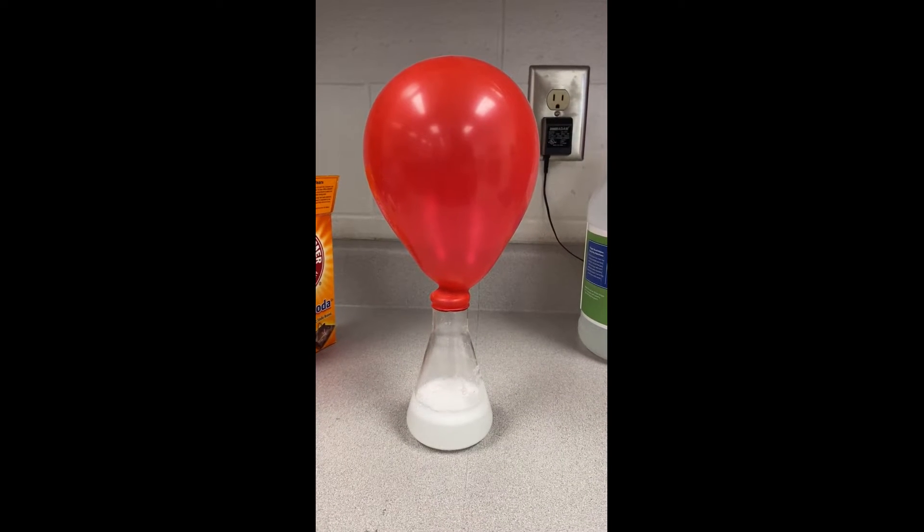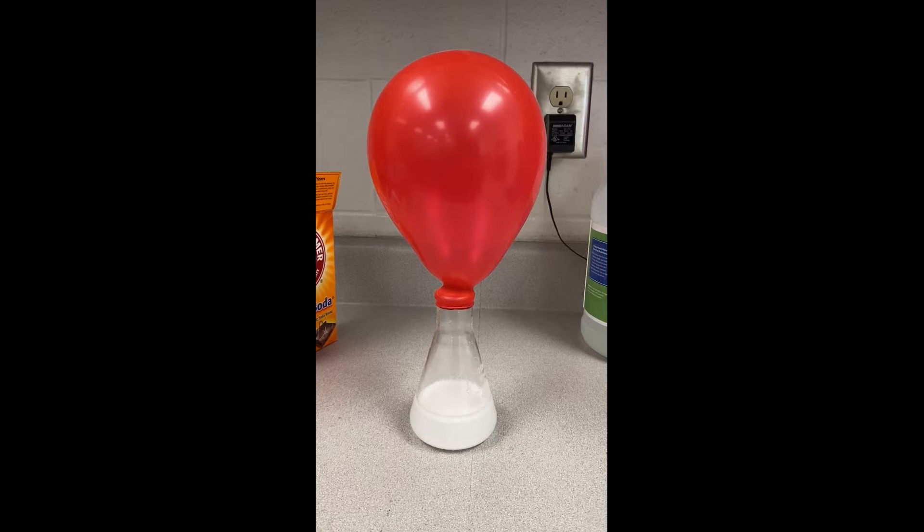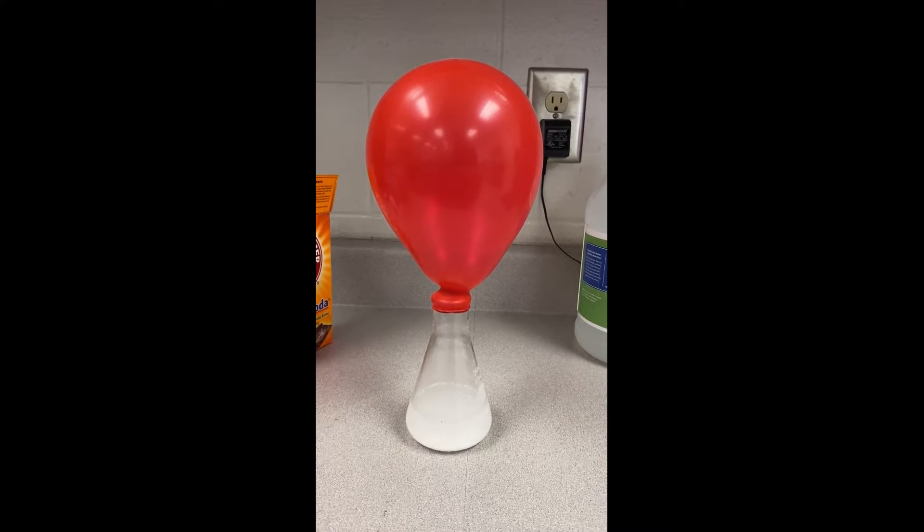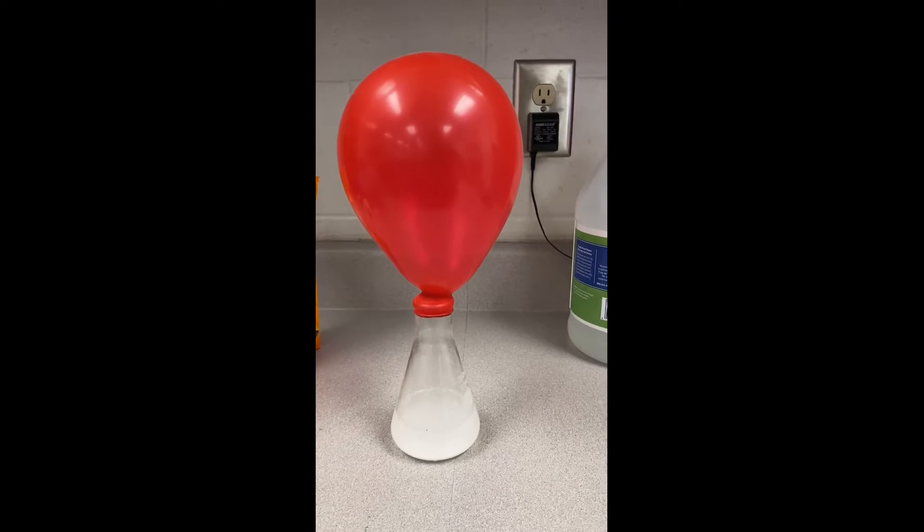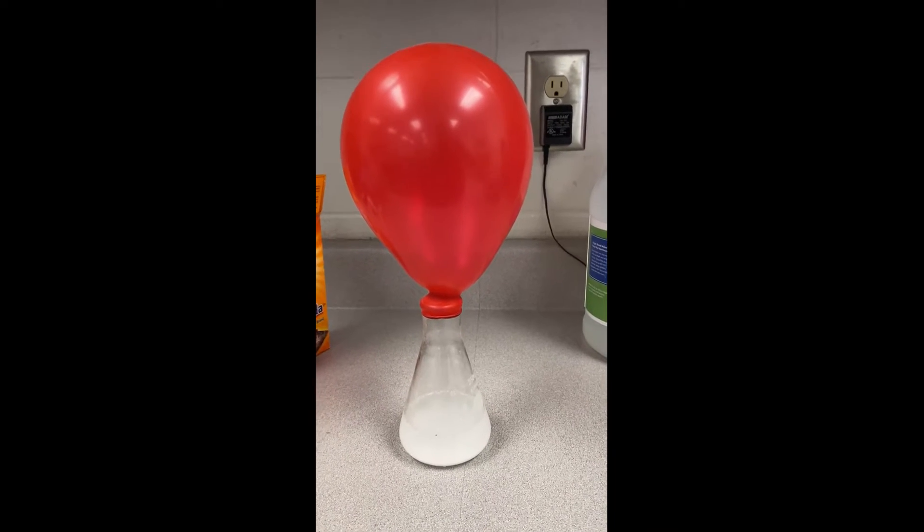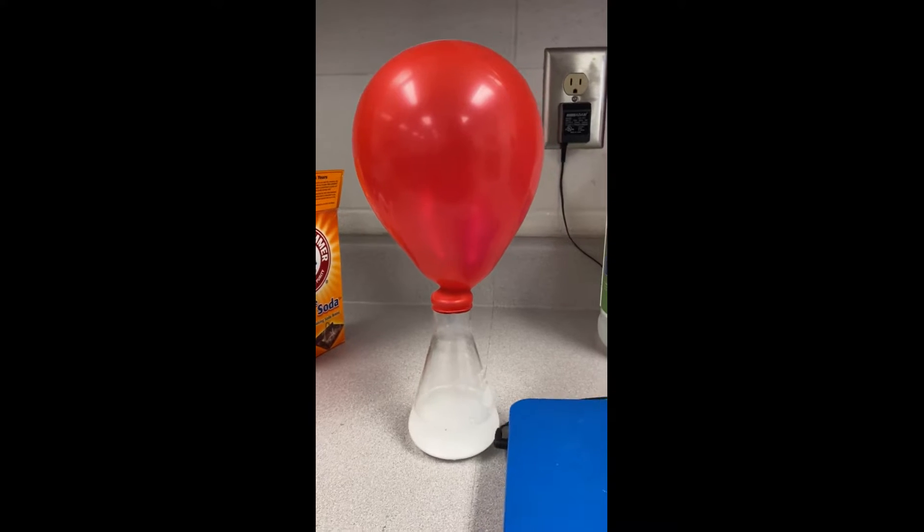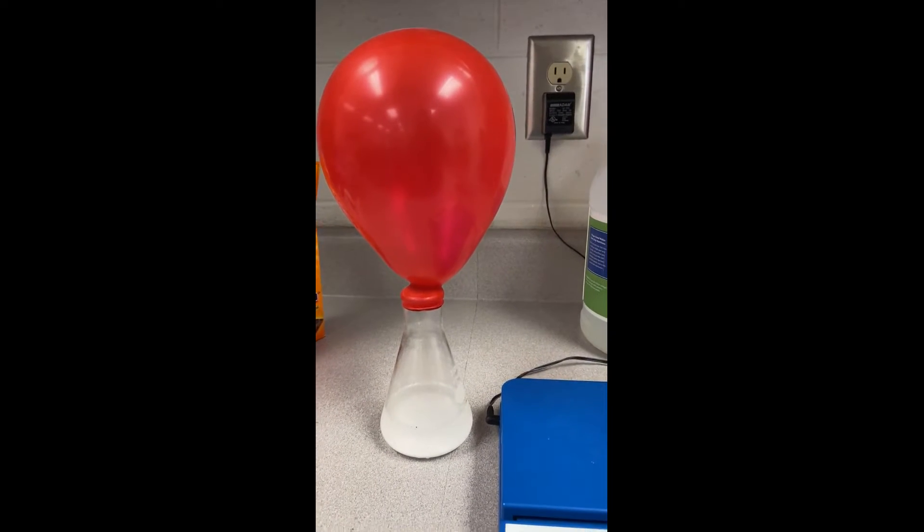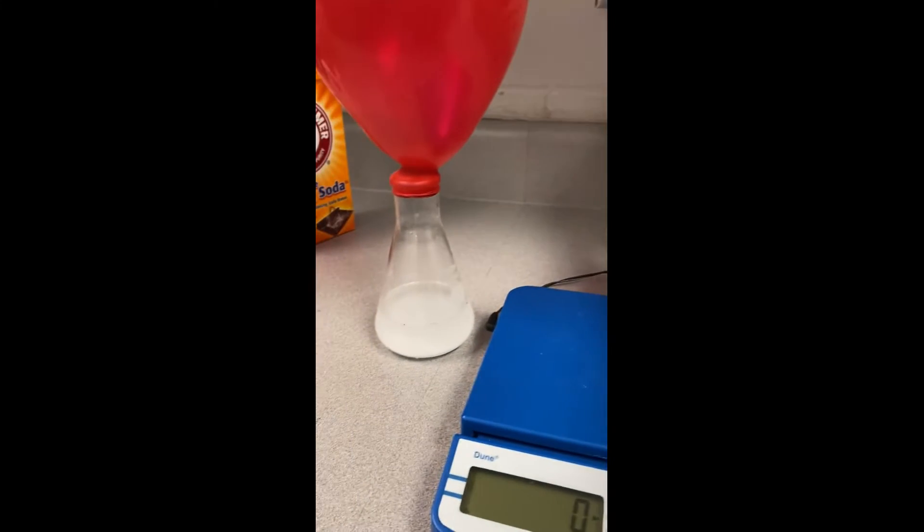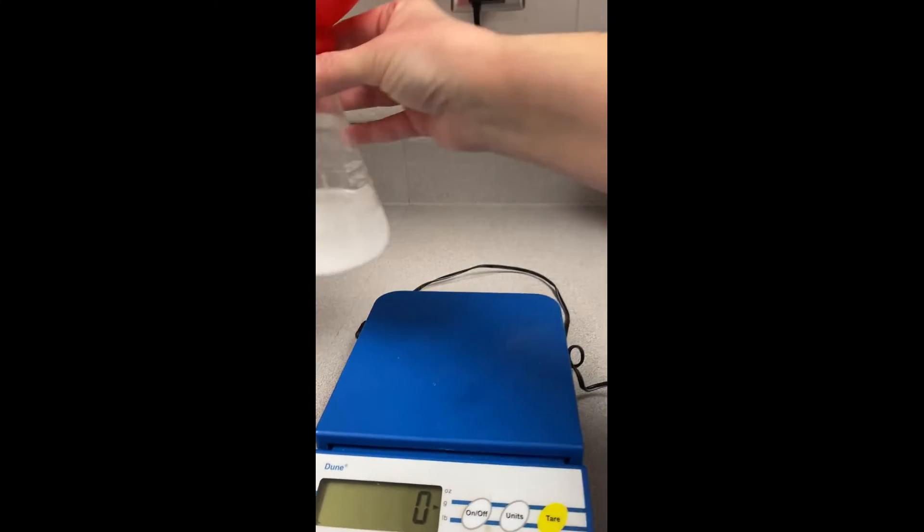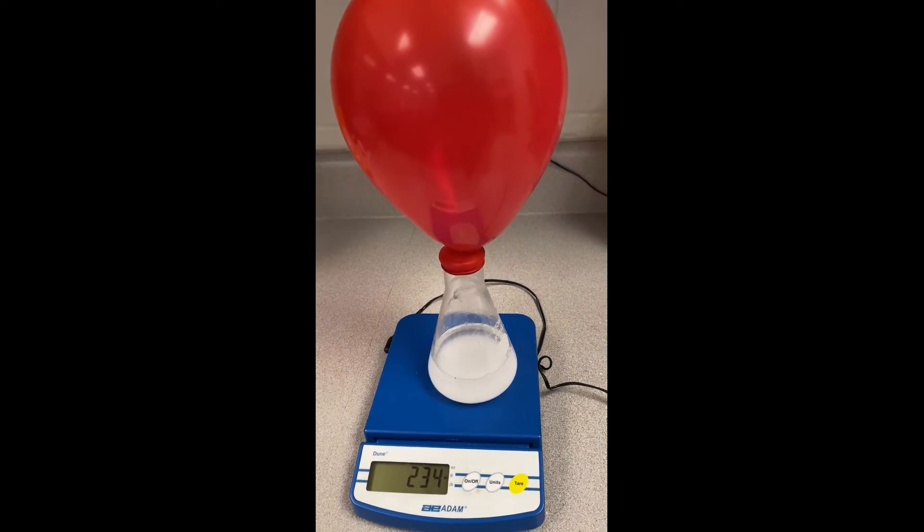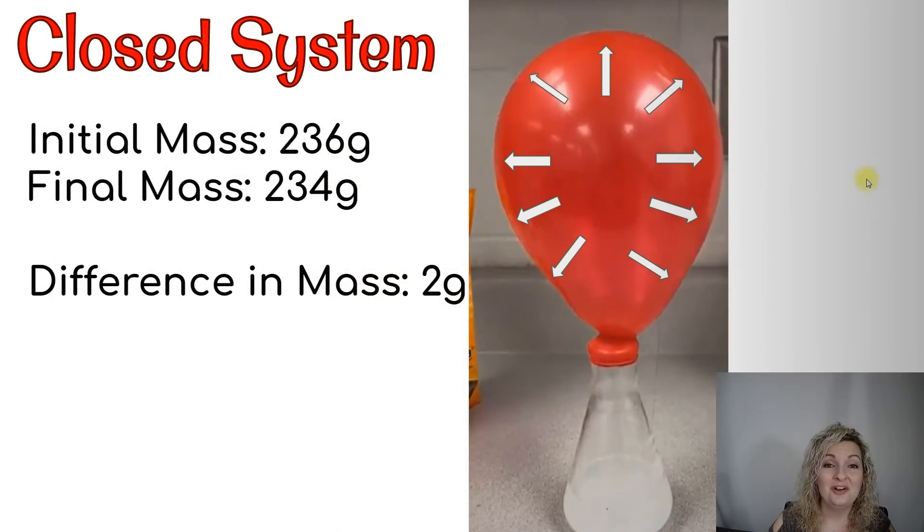Now when our chemical reaction is done and the bubbling has ended, I am going to go ahead and put it on a digital scale and take the mass that is going to be our final mass for our closed system. So remember the initial was 236. If the law of conservation is true in this case, we should get 236 as well. Let's see what we get. I'm going to put it on the scale and it is 234 grams.